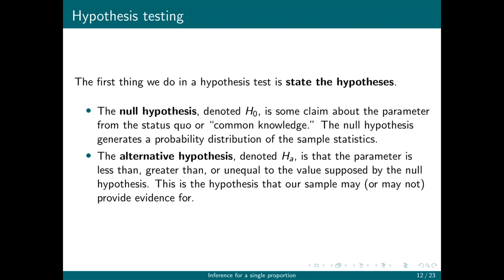The alternative hypothesis, denoted HA, is that the parameter is less than, greater than, or unequal to the value supposed by the null hypothesis. This is the hypothesis that we're trying to find evidence for with our sample.